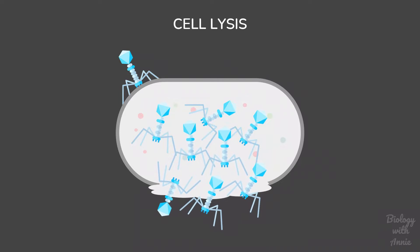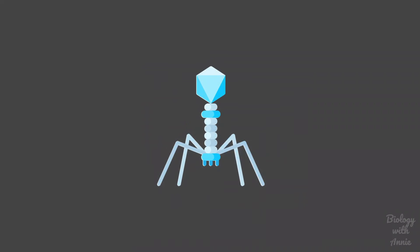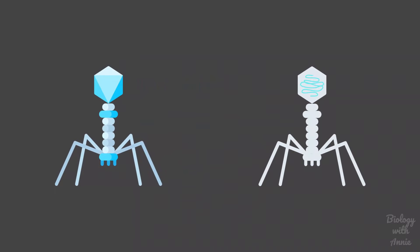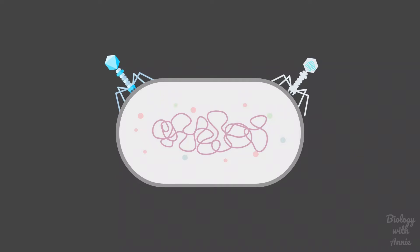At the time of this study, it was well known that T2 phage is made up of proteins and DNA, but which of these two components acts as genetic material was not understood. So Hershey and Chase designed an experiment to determine whether the phage protein or the phage DNA is injected into the bacterial cell during phage reproduction.